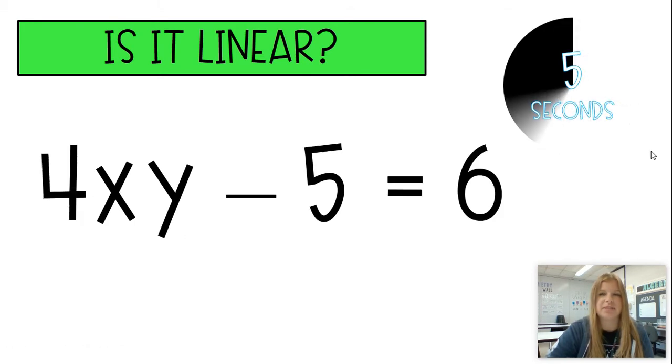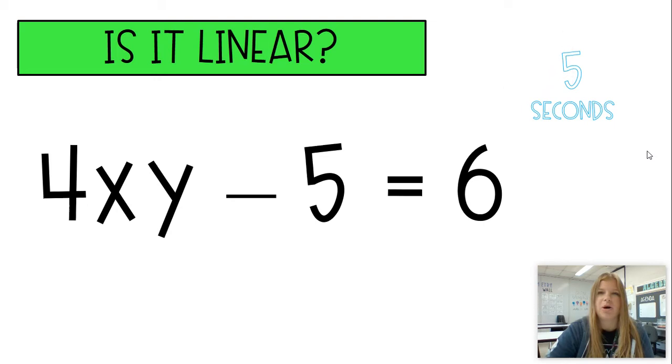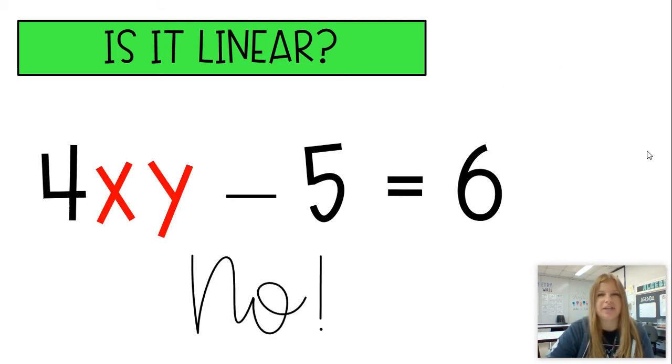4XY minus 5 equals 6. Hopefully, you realize right away it's definitely not linear. If you see X and Y side by side, that means multiplying, and that is definitely not a linear equation.